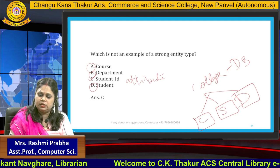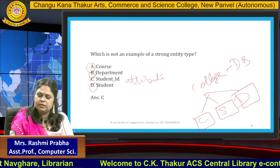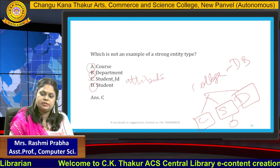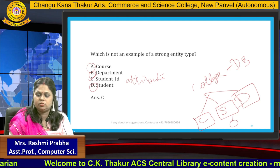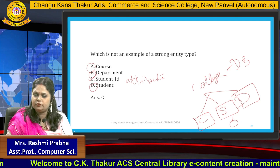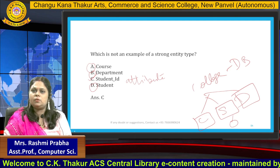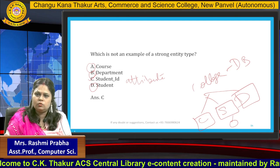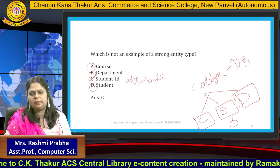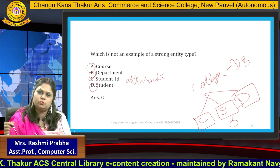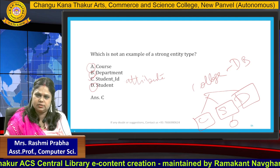But student ID is just one property of the student entity — it is an attribute, not an example of an entity type. That is all for this video. We will continue in the next video. Thank you so much for watching.